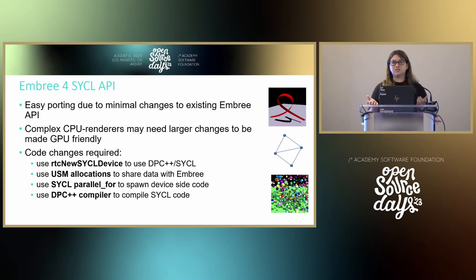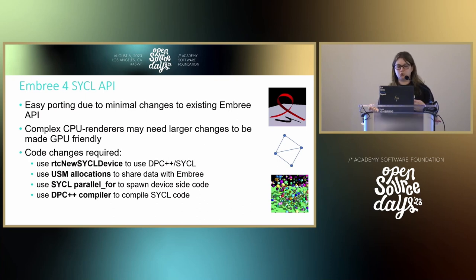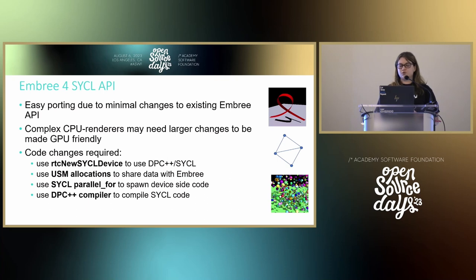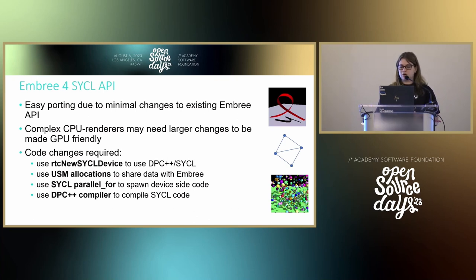We wanted to keep porting easy for you. Being a rendering workload, you may have to adjust your renderer to be designed well to parallelize on a GPU. But at least on the Embree side, we tried to keep that simple. Just a word of caution — you may need to do some design changes to go from CPU. For the SYCL API changes: you'll use a new SYCL device to enable DPC++ and SYCL, we enabled USM allocation so you can share data with Embree, we use SYCL parallel_for to spawn device-side code, and we use the DPC++ compiler to compile the SYCL code — again, only if you want to enable GPU support.